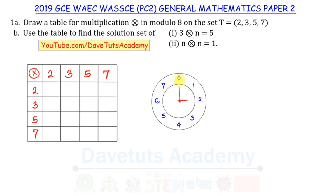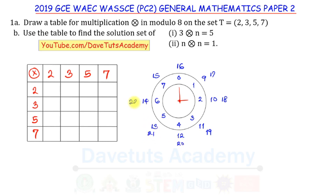On the modulo 8 clock: 1 is congruent to 9, 2 is congruent to 10, 3 is congruent to 11, 4 is congruent to 12, 5 is congruent to 13, 6 to 14, 7 to 15, and 16 rounds back to 0. Then 17 ≡ 1, 18 ≡ 2, 19 ≡ 3, 20 ≡ 4, 21 ≡ 5, 22 ≡ 6, 23 ≡ 7, and 24 rounds to 0 again.